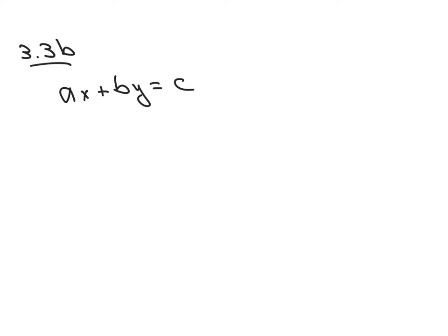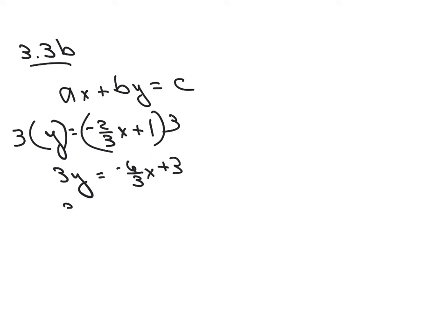For example, if we had Y equals negative two-thirds X plus one, and you wanted to write that so it didn't have a fraction, what we would do is multiply this whole thing by three and this side by three. So we'd have three Y equals negative two X plus three.